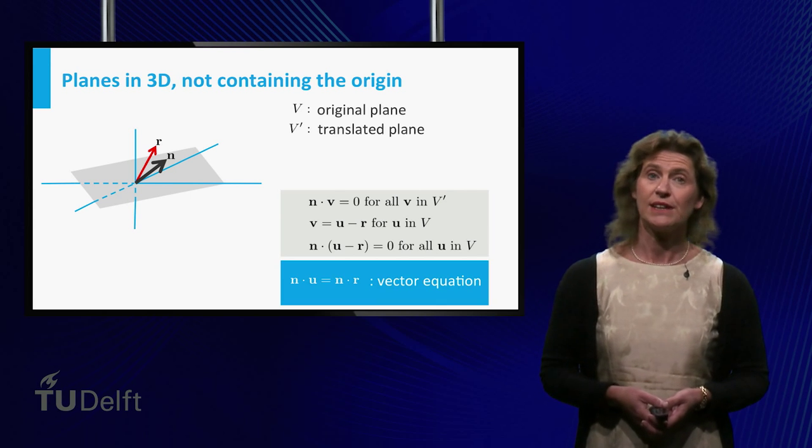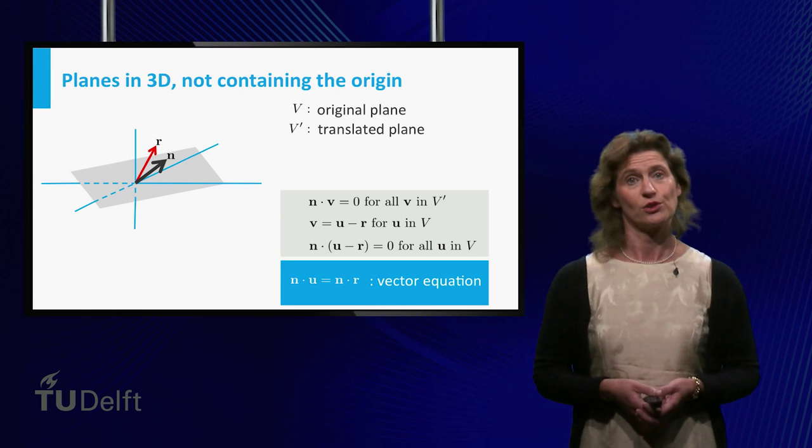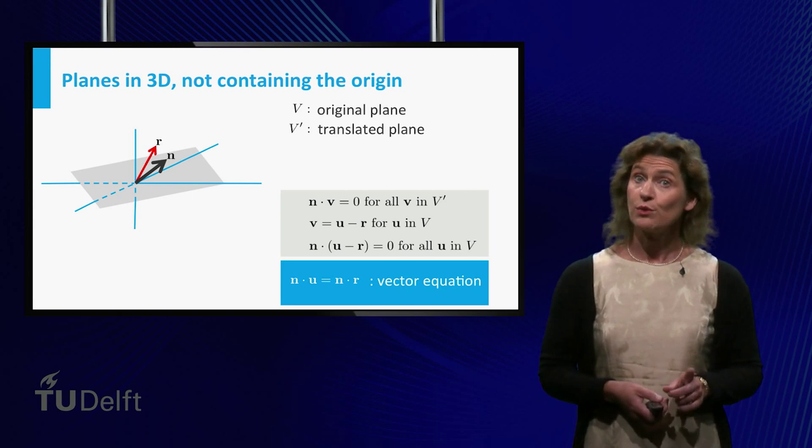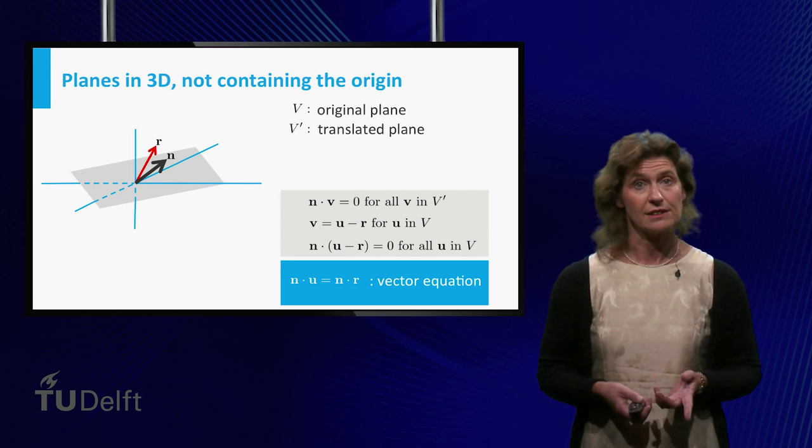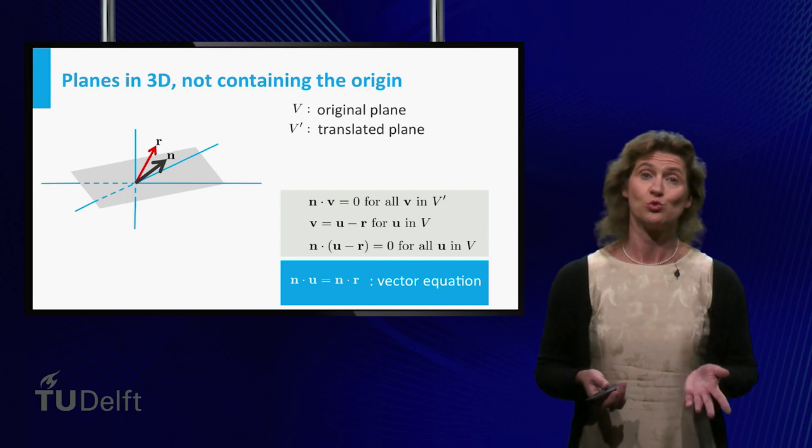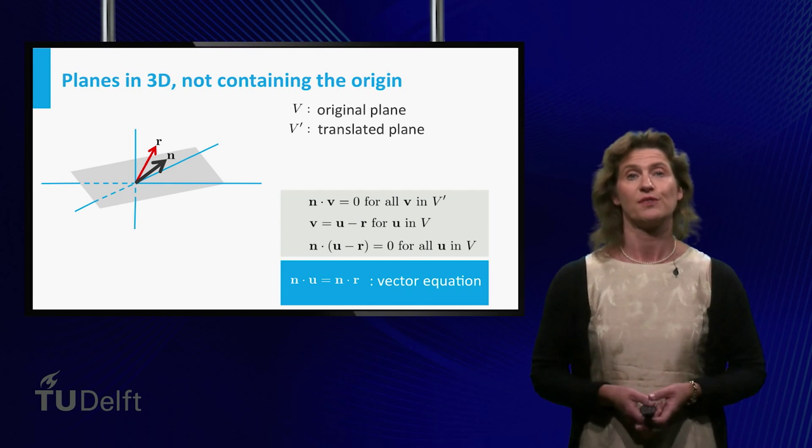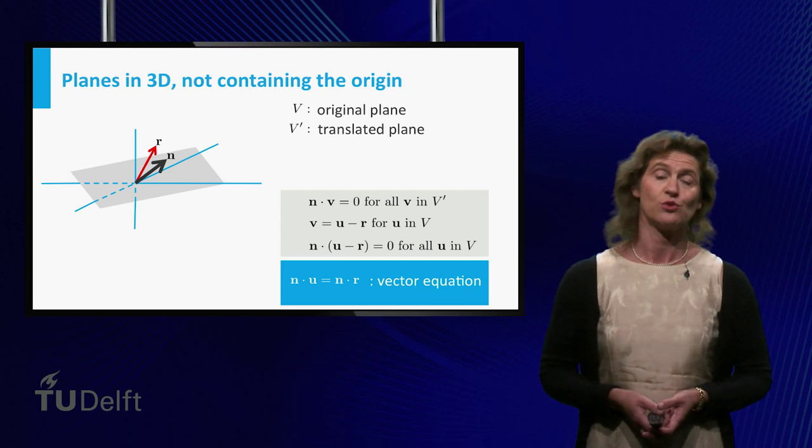So you found n dot product (u minus r) equals 0. You can also write this equation as n dot product u equals n dot product r, where the right hand side is just a scalar, because these are two explicitly known vectors. And here it is, the vector equation of the plane with normal vector n.